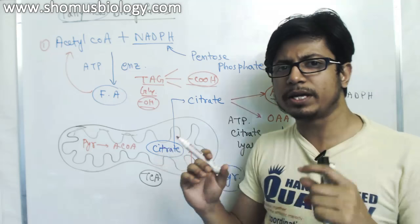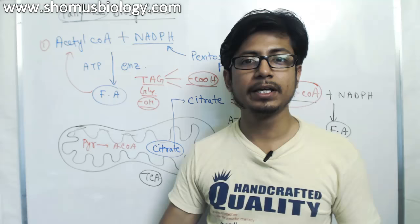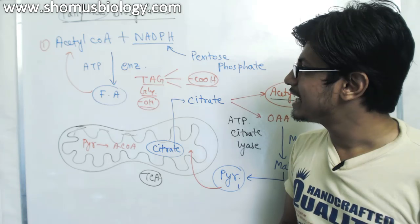FADH2 and NADH, once undergoing the process of electron transport chain, will produce a lot of energetic molecules which are ATP. At the end, once they produce the ATP, we utilize that ATP for the rest of the processes in the body.